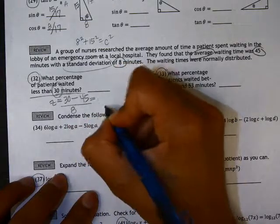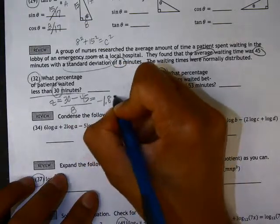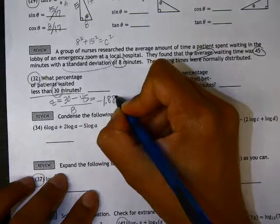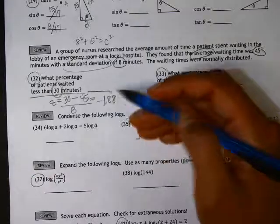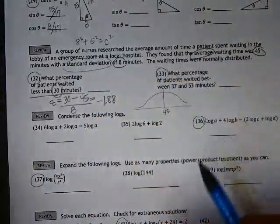So evaluating that, we get a z-score of negative 1.88. Now, if we're trying to find the percentage of patients that waited less than this amount of time, on the z-table we would need to look at the negative z values.